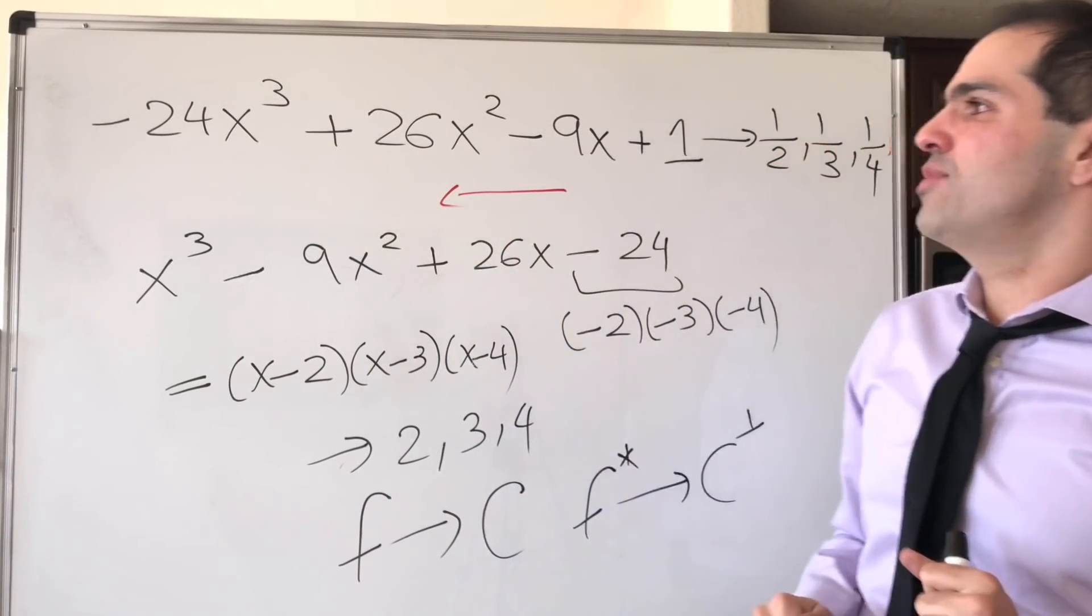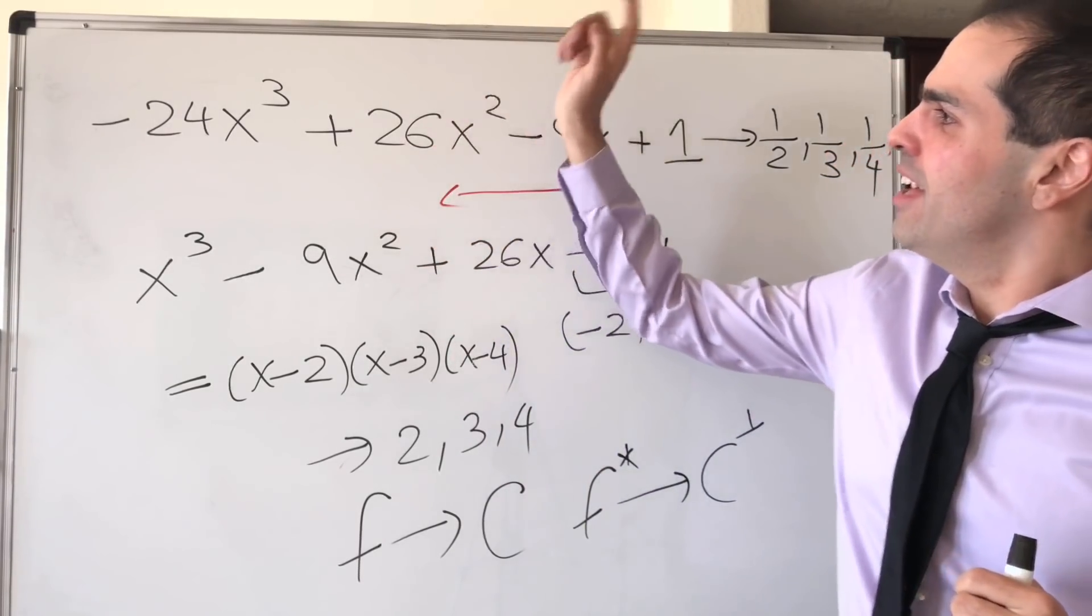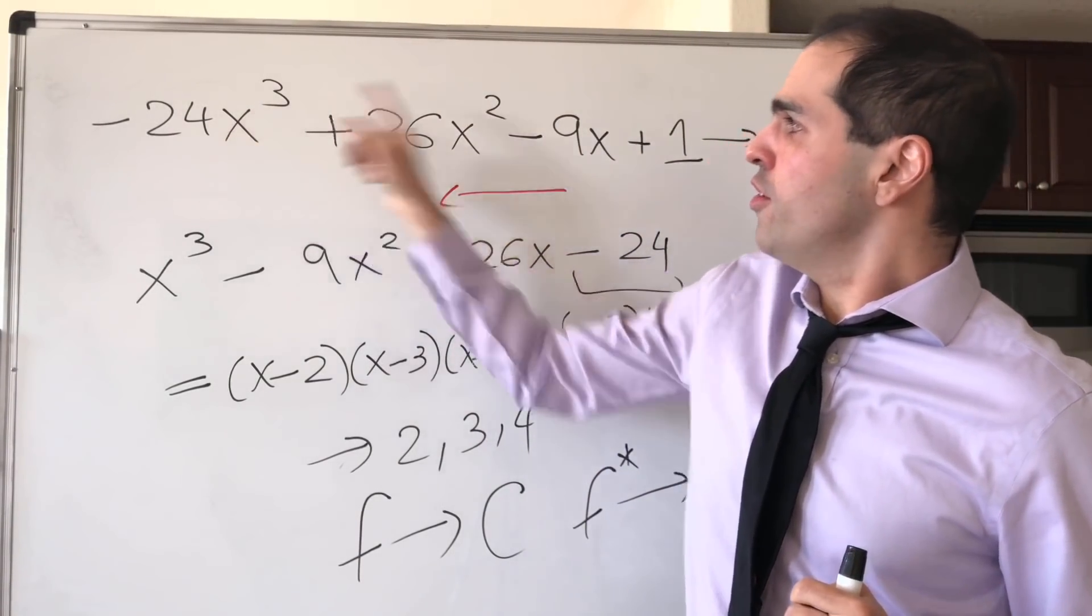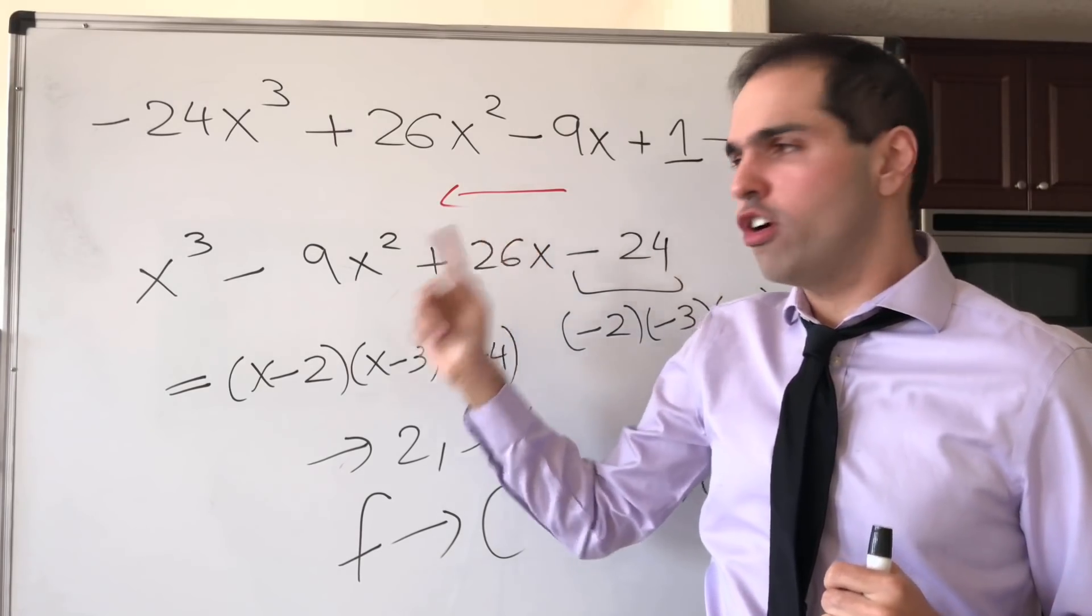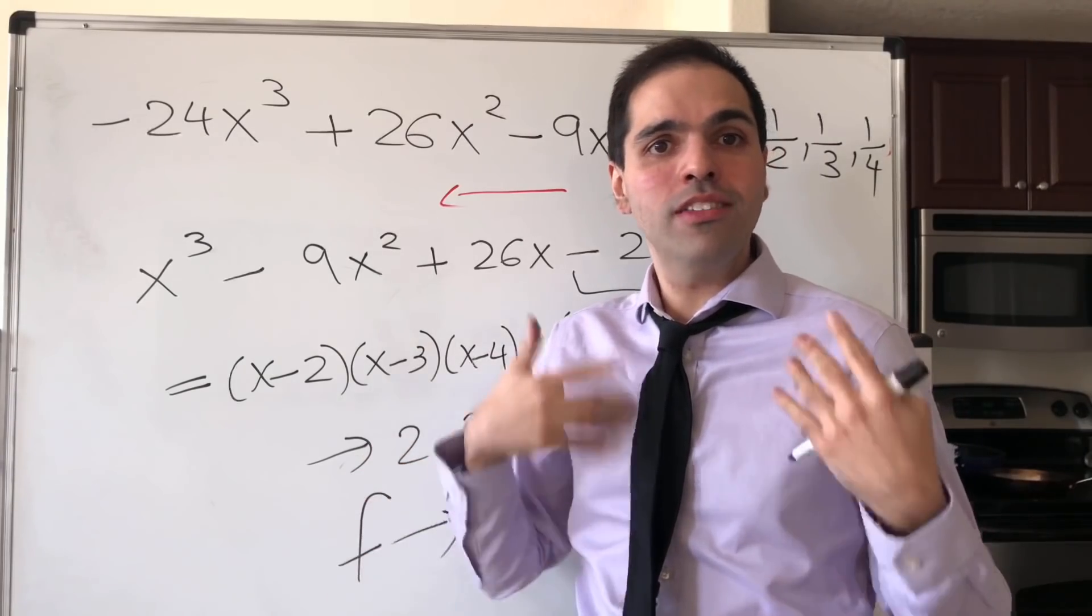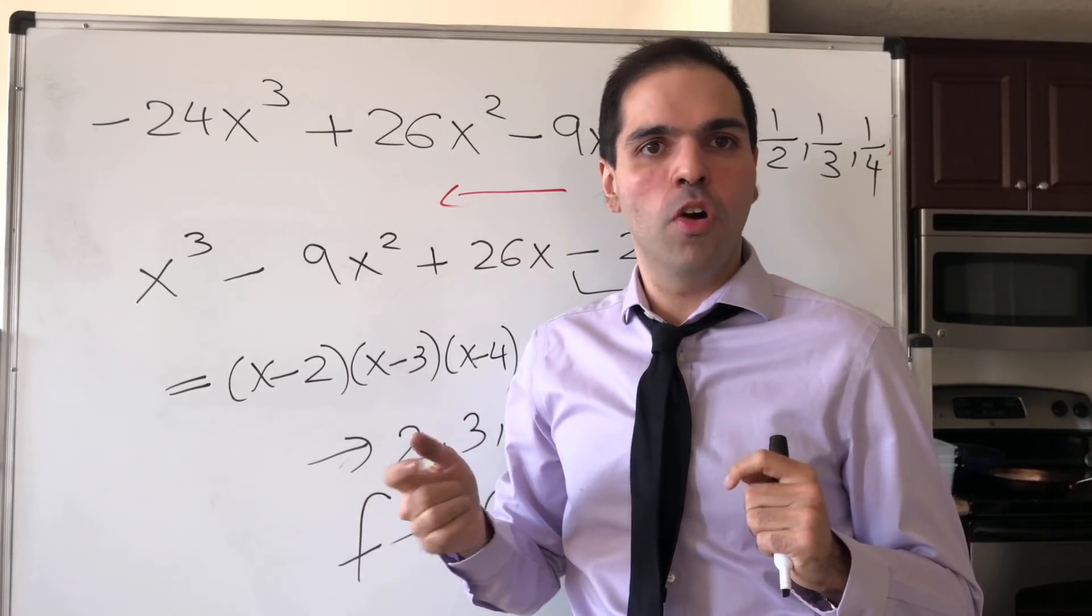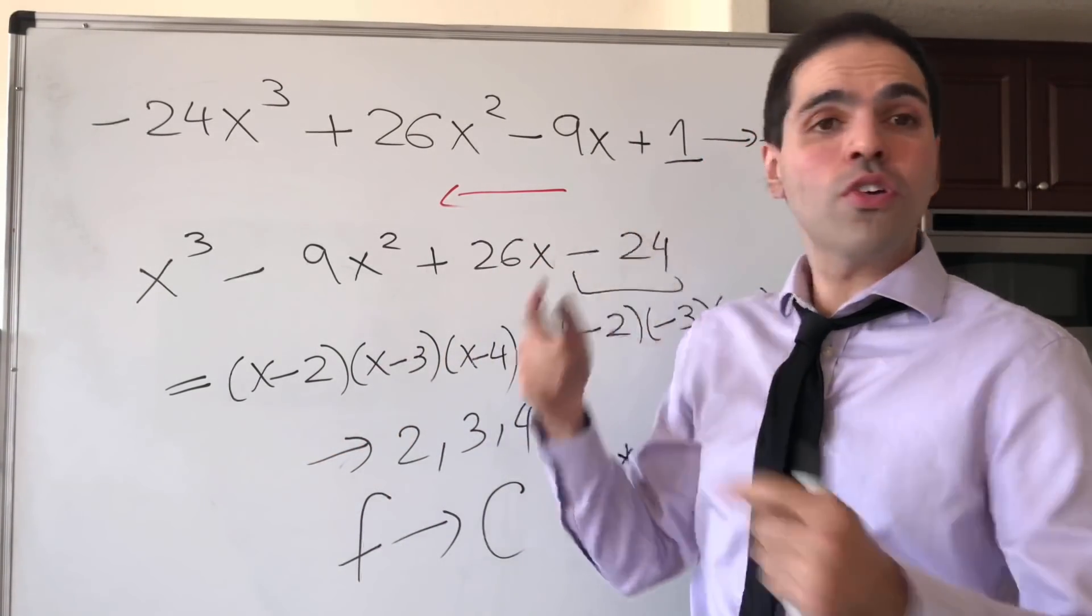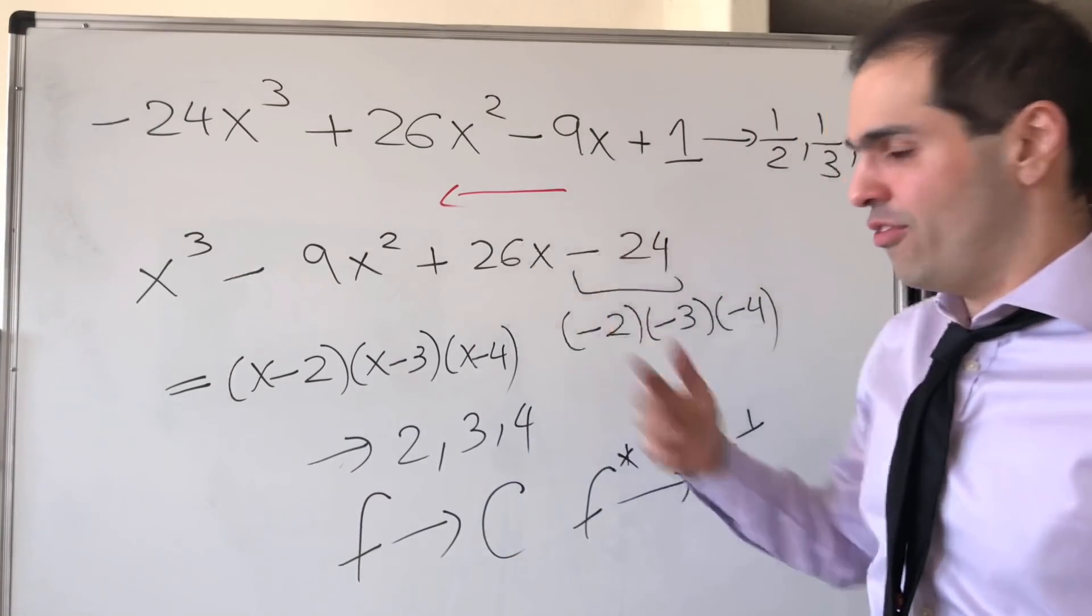But of course, this brings me to my next business. Because here, when we change the order of coefficients, we got a new polynomial. But it turns out there's some special ones called palindromic polynomials for which the order doesn't matter.